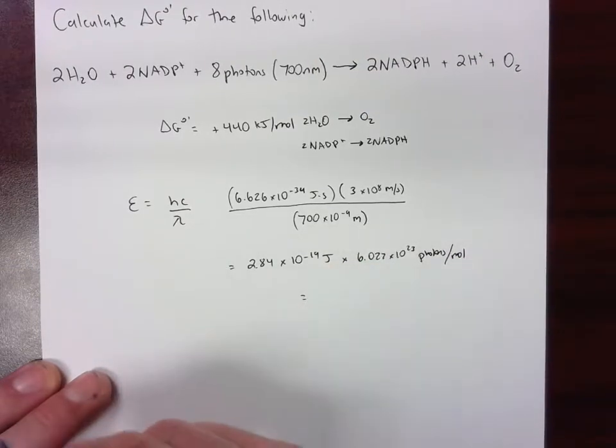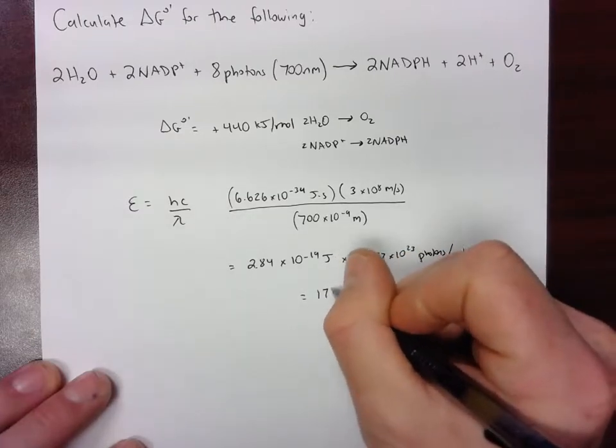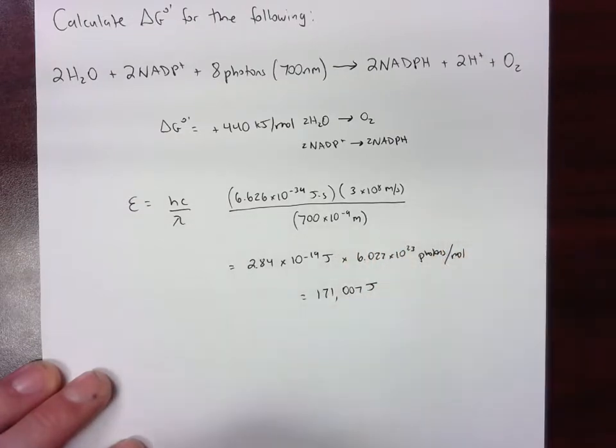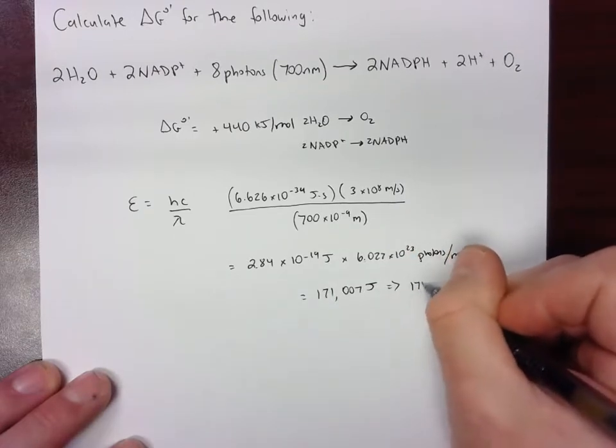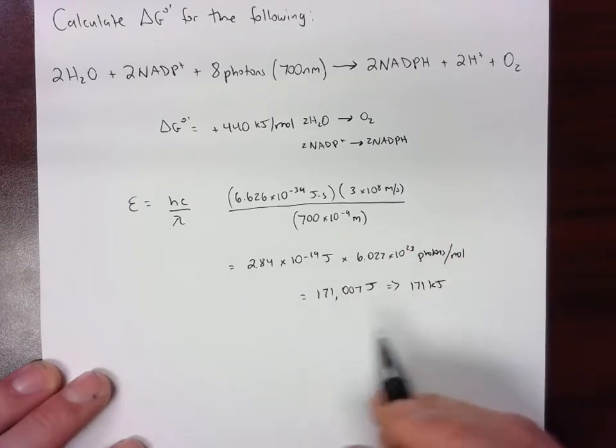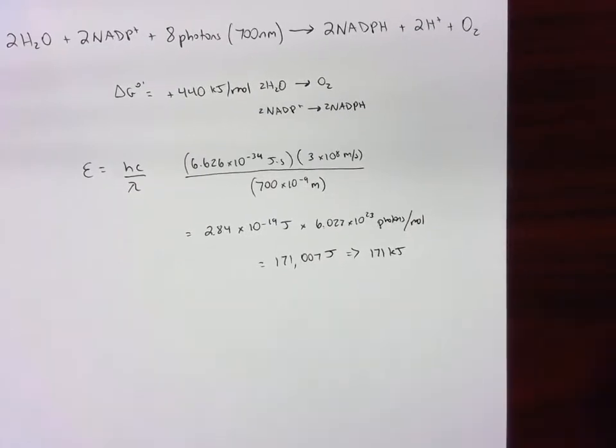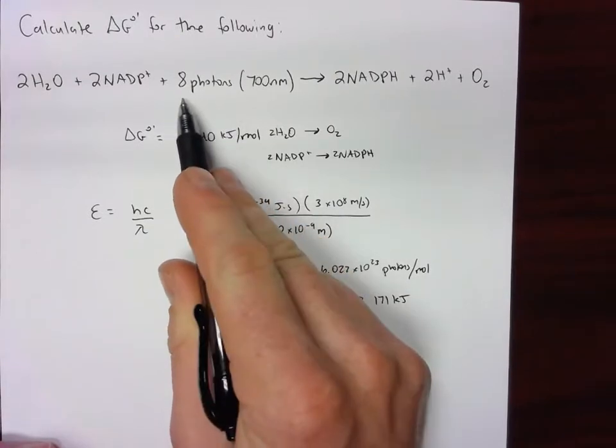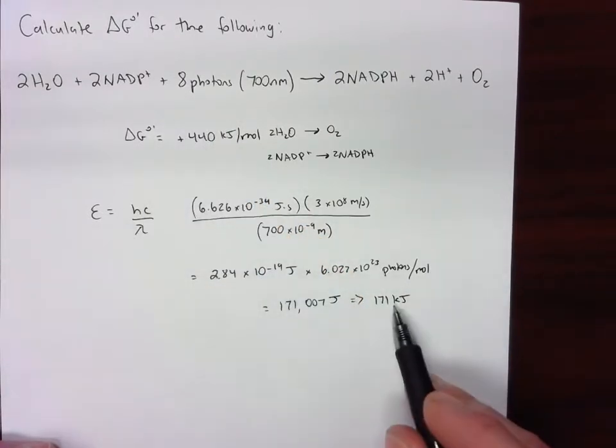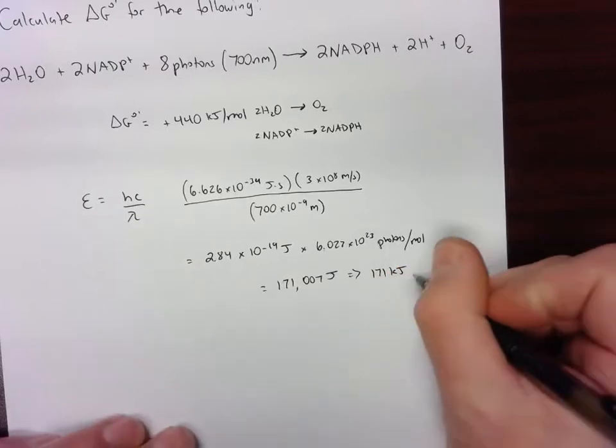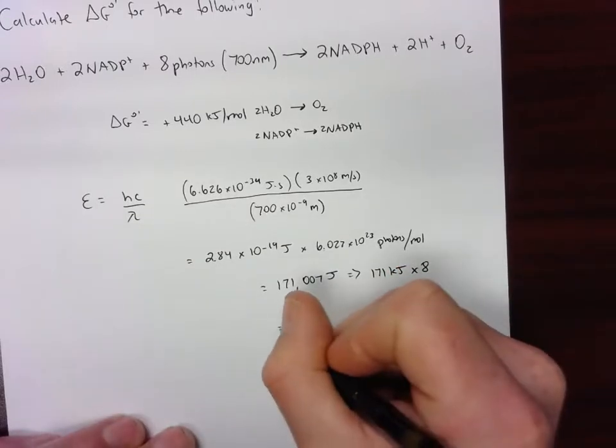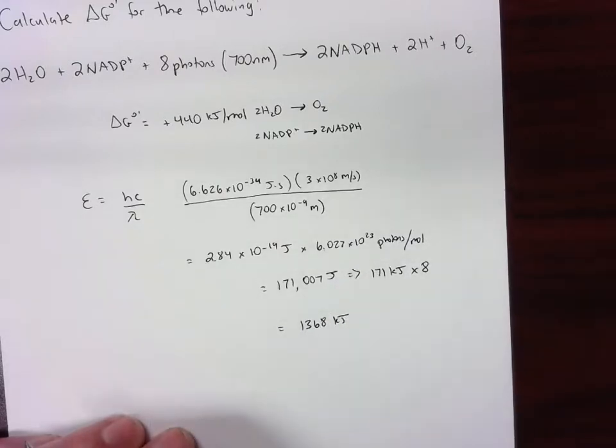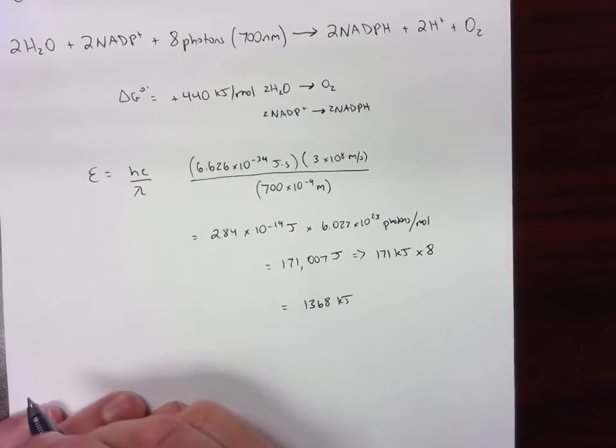When we do that, we get 171,007 joules, which is approximately 171 kilojoules. But remember there's not just one mole of photons, there are eight moles of photons, so we need to take this value and multiply it by eight. When we do that, we get 1368 kilojoules for the eight moles of photons.